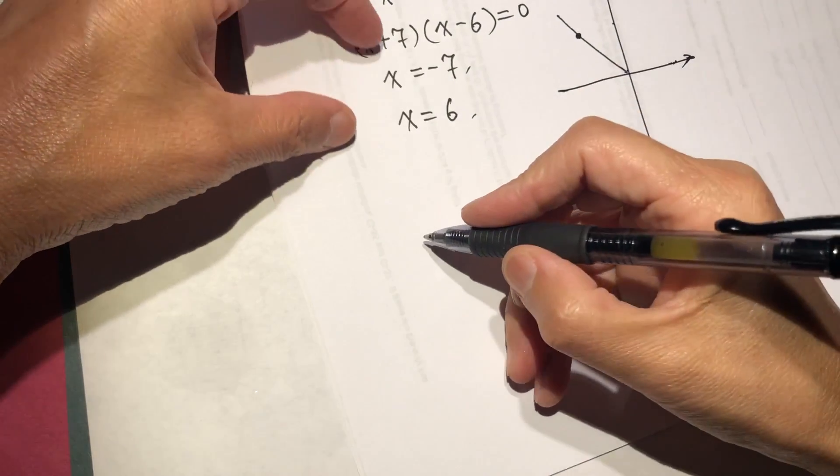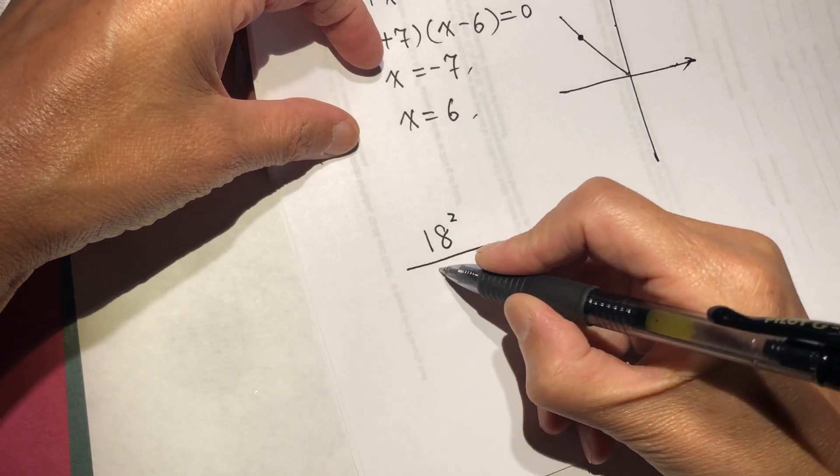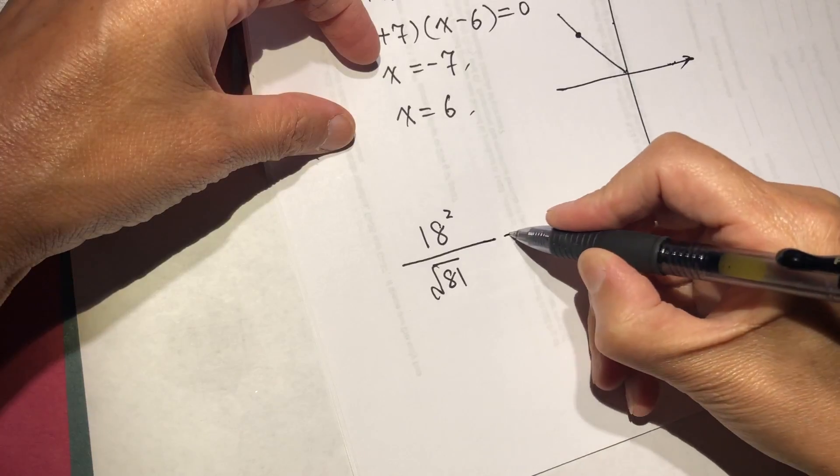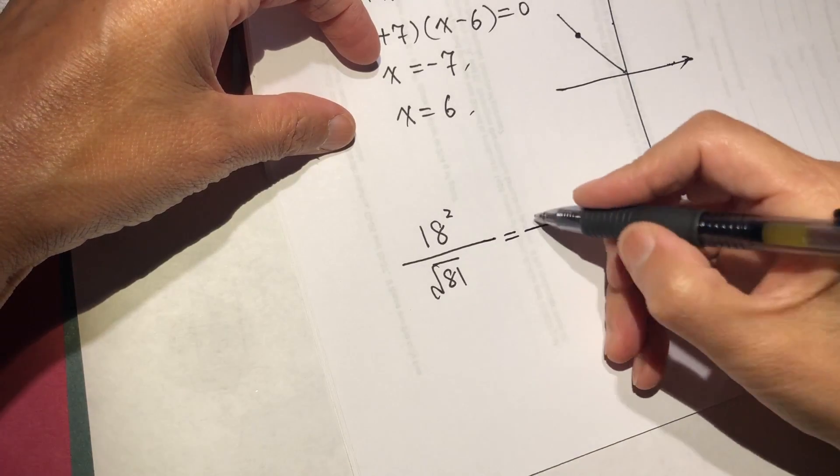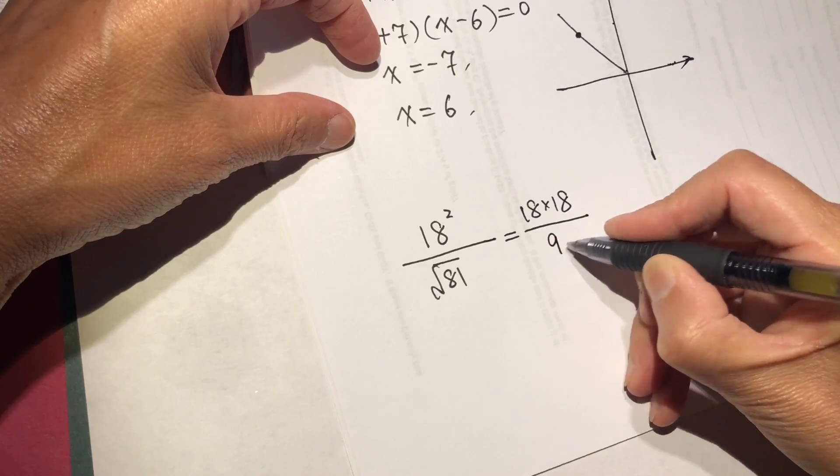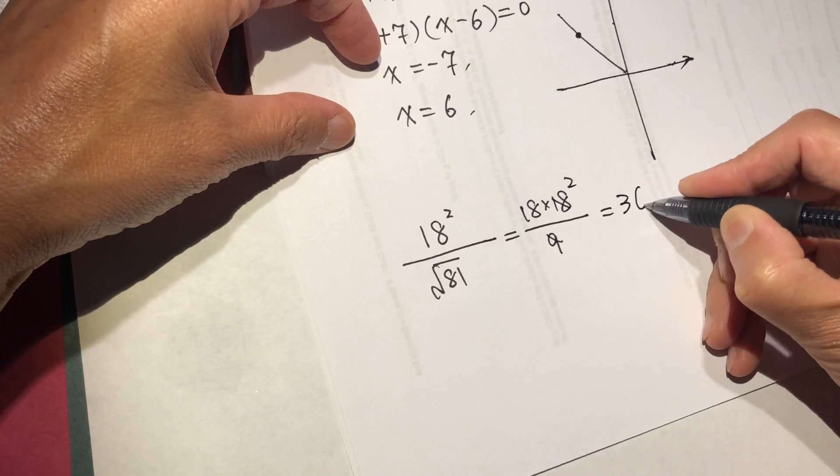This one is kind of repeating. 18 squared divided by 81 equal to 18 times 18 divided by 9, which is 36.